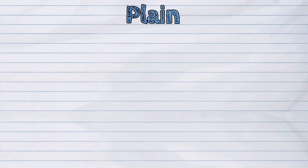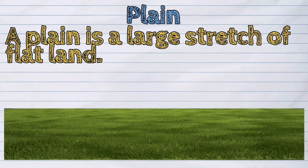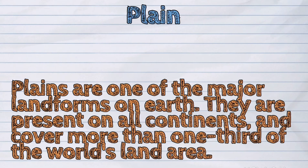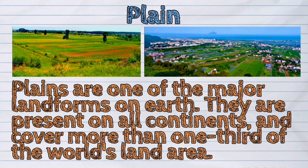The next landform is the plain. A plain is a large stretch of flat land. It is in this landform where people normally build houses and plant crops. Plains are one of the major landforms on Earth. They are present on all continents and would cover more than one third of the world's land area.